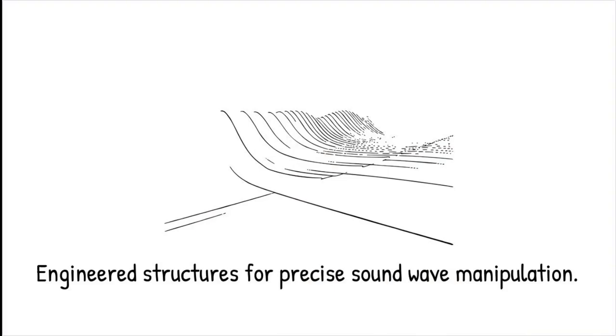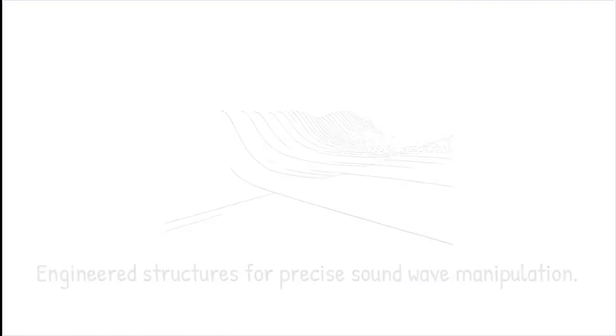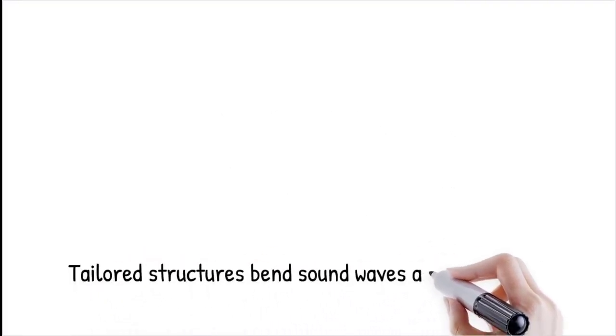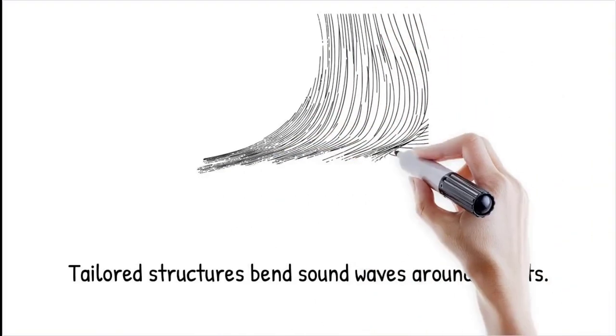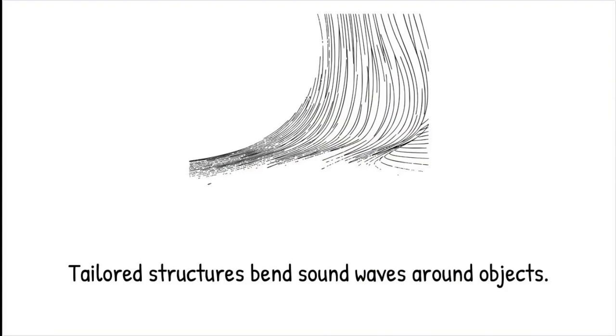By tailoring these structures, researchers can create negative acoustic refraction, a property that bends sound waves in unnatural ways, allowing them to curve around objects instead of being absorbed or scattered.